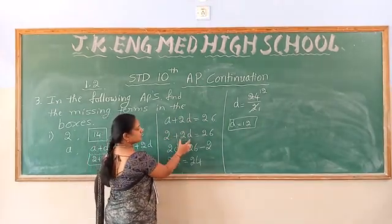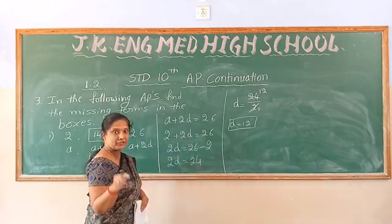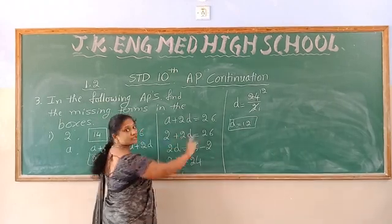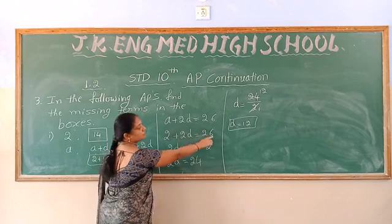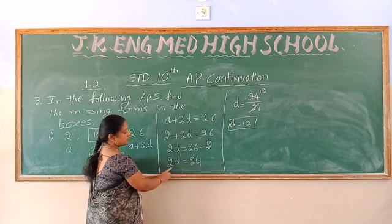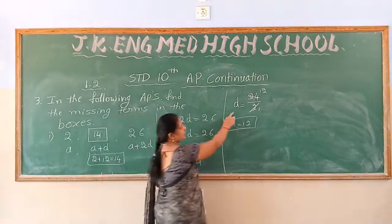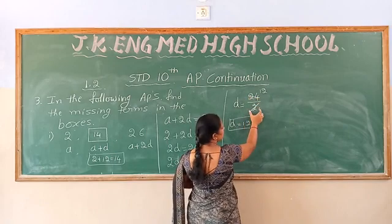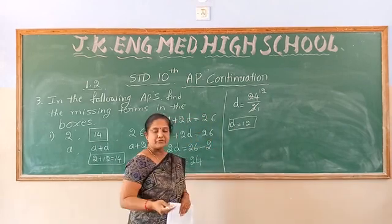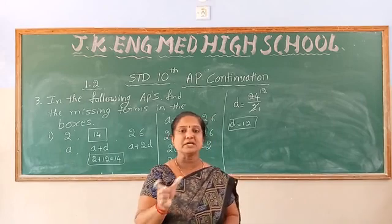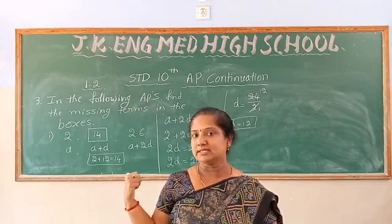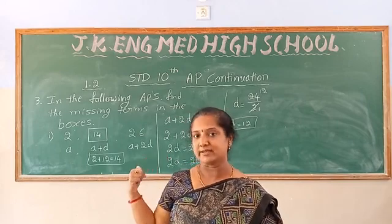After substituting, 2d equals 24. D should be on one side and the remaining term on the other side: 26 minus 2 is 24, so 2d equals 24, and d equals 24 divided by 2 equals 12. After knowing a equals 2 and d equals 12, the second term is a plus d equals 2 plus 12 equals 14. That is the answer for the second blank.